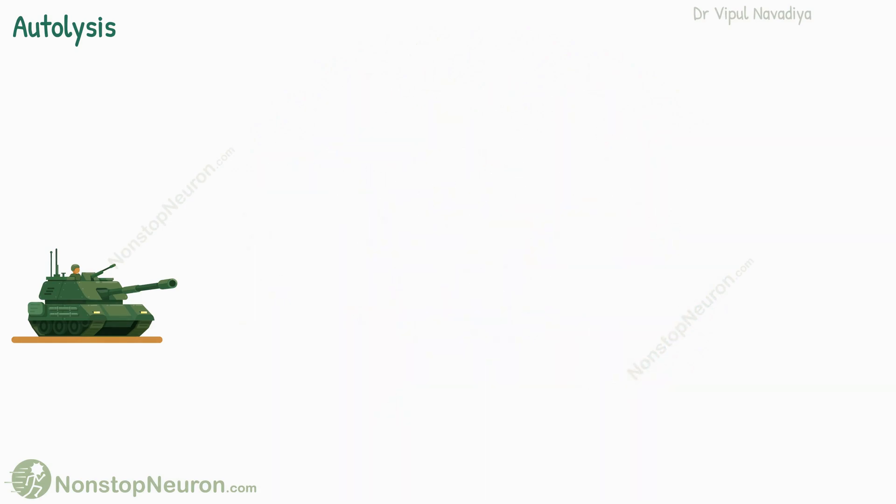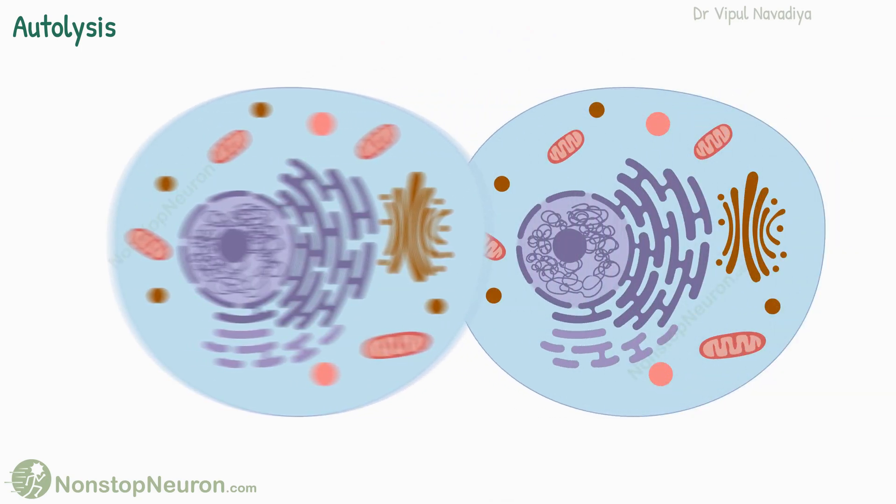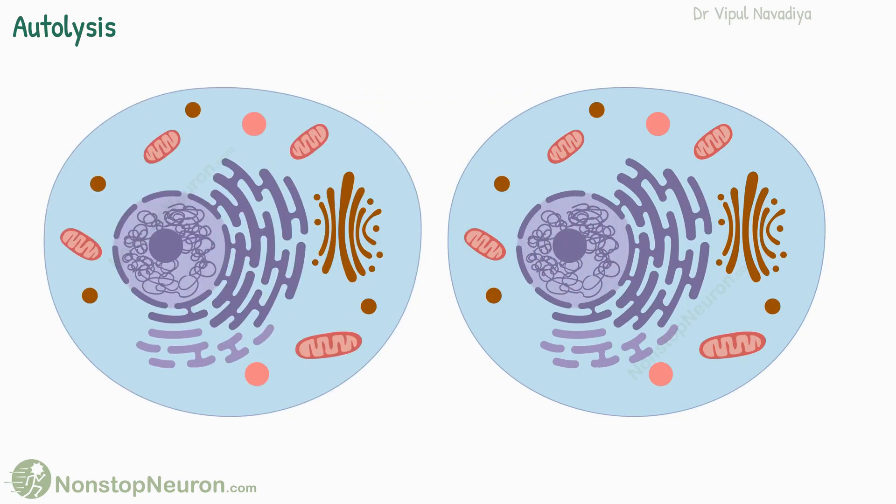This is called autolysis. Thus, autolysis results in the complete removal of the cell. If needed, the adjacent cell divides by mitosis to replace the old one.